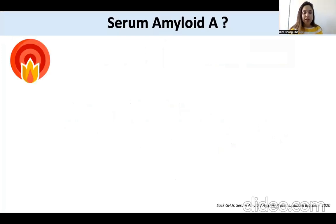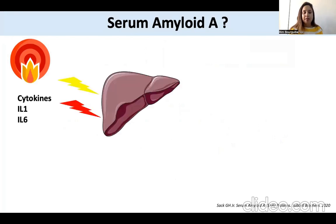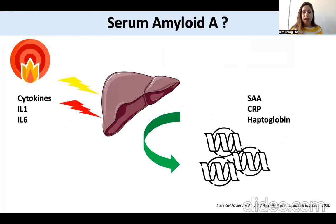In fact, under certain circumstances like inflammation or infection, cytokines are produced, like IL-1 and IL-6. These cytokines stimulate the liver to produce acute phase inflammation proteins such as SAA, CRP, and haptoglobin.